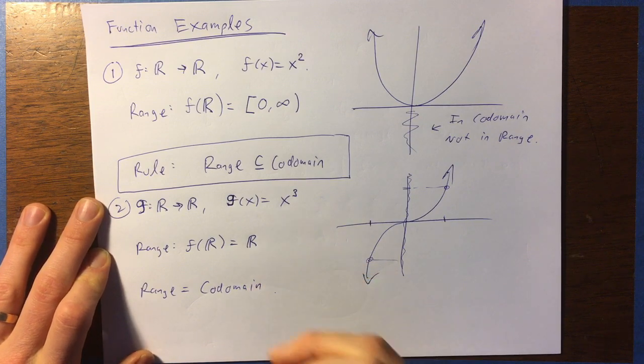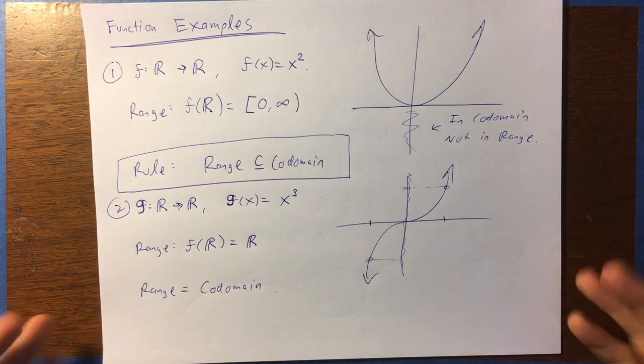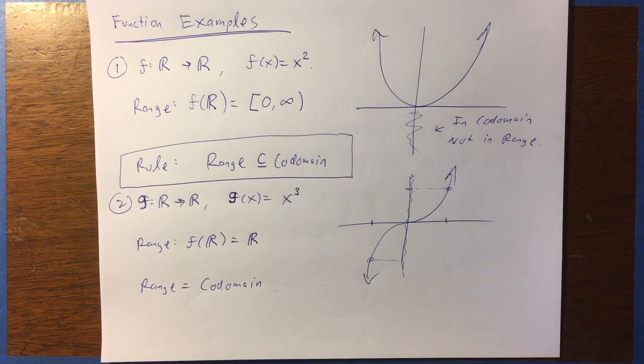Okay, so that's, I hope it gives you a better idea of what the distinction is between the codomain and the range.